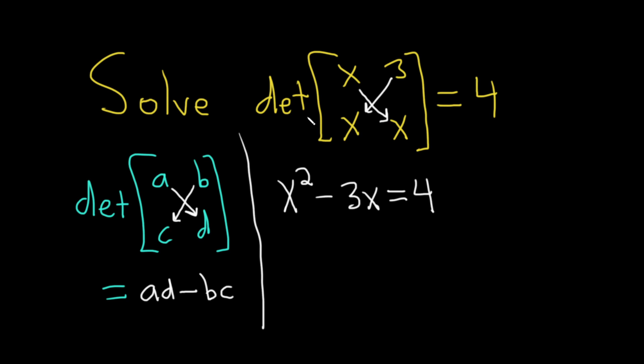We have to find the values of x. Because this is a quadratic equation, we'll set it equal to 0. We'll subtract 4 from both sides, so we have x squared minus 3x minus 4, and that's equal to 0.